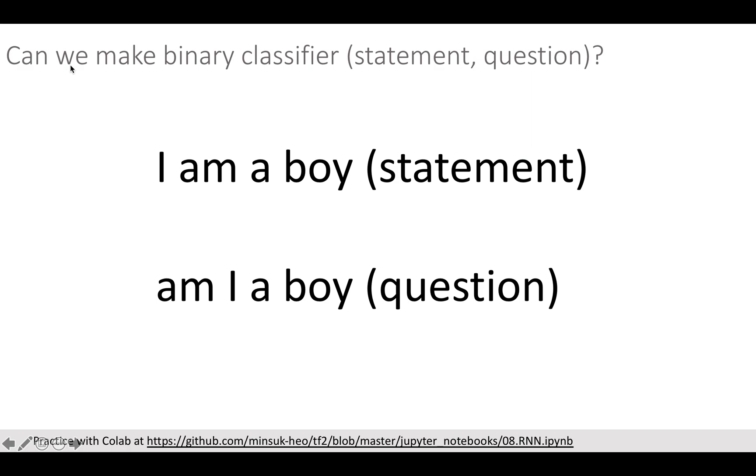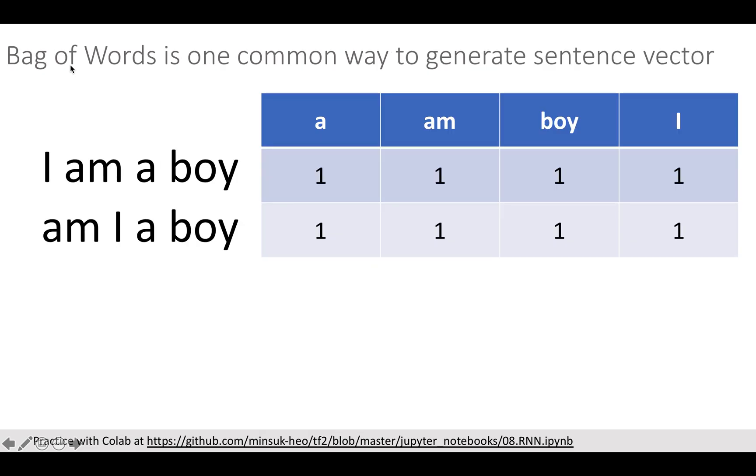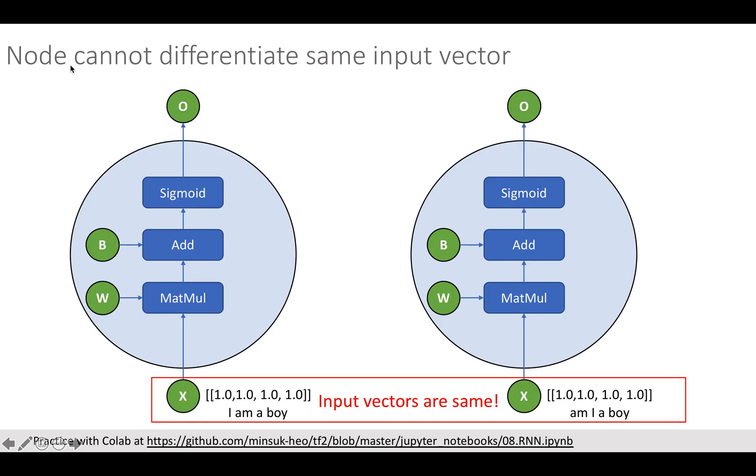This is just simple binary classification. Let's use deep learning to solve this problem. Since input should be numbers for any machine learning model, we will use bag of words trick to encode sentences into numbers. As you can see, since these two sentences have same words inside, the encoding of two sentences are now identical.